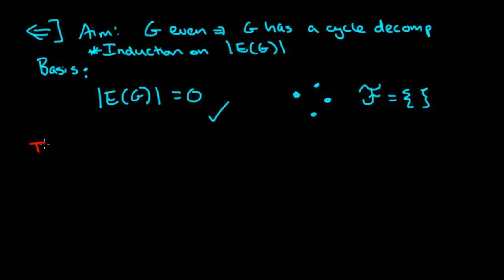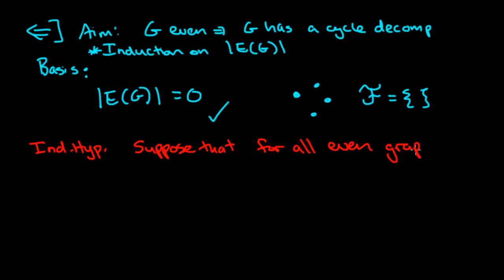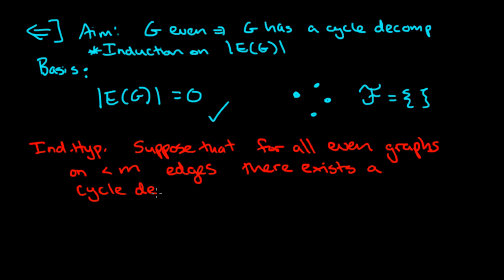The inductive hypothesis: suppose that for all even graphs on fewer than m edges, there exists a cycle decomposition. Because this is strong induction, we suppose the claim holds for all even graphs on fewer than m edges. What we want to show is that when we have m edges, the claim still holds — we can give a cycle decomposition of that graph.